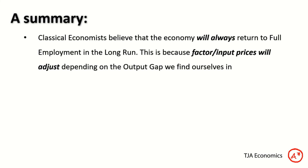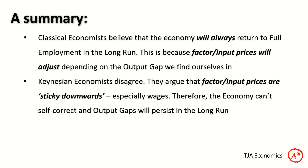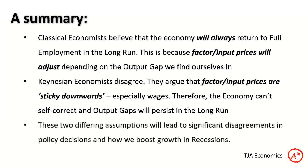To summarise: classical economists believe the economy will always return to full employment in the long run because factor input prices adjust depending on the output gap. Keynesian economists disagree — they argue that factor input prices are sticky downwards, especially wages. Therefore the economy can't self-correct and output gaps will persist in the long run. These two differing assumptions lead to significant disagreements in policy decisions and how we boost growth in recessions — use that dichotomy to impress examiners.